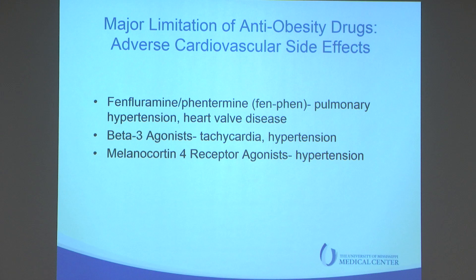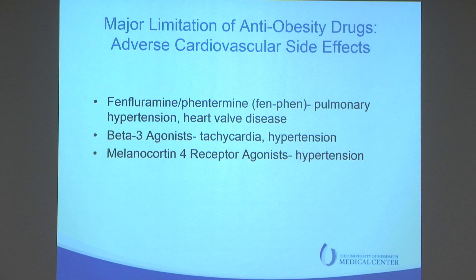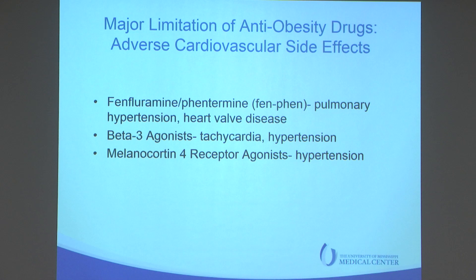So what is the major limitation of anti-obesity drugs? Why don't we have more? The significant problem is adverse cardiovascular side effects. Fen-phen was pulled because it caused pulmonary hypertension and heart valve disease. Beta-3 agonists can cause weight loss but give you tachycardia and hypertension. Melanocortin-4 receptor agonists are a hot emerging area, but studies from our department have shown that antagonizing the MC4 receptor results in hypertension. There are many agents that can help you lose body weight, but they never make it to the clinic because of adverse cardiovascular side effects.